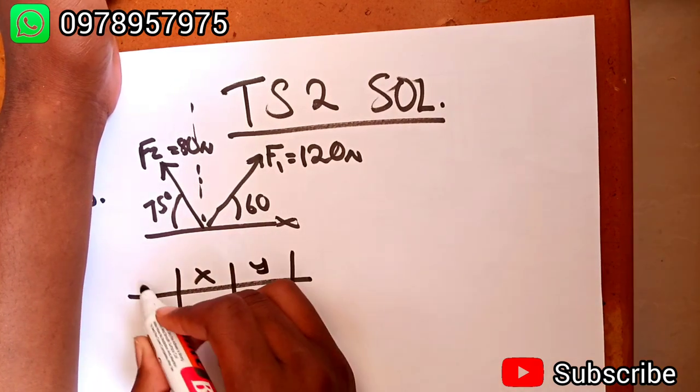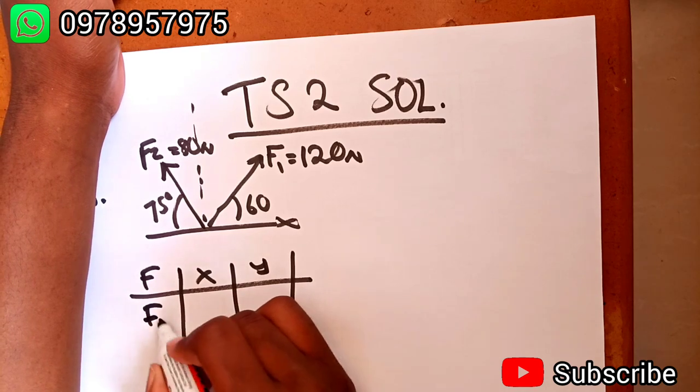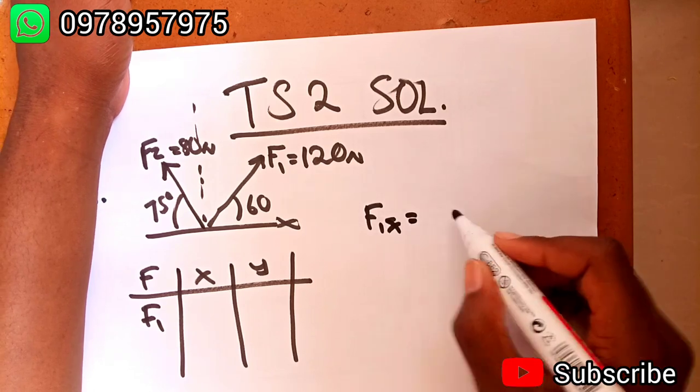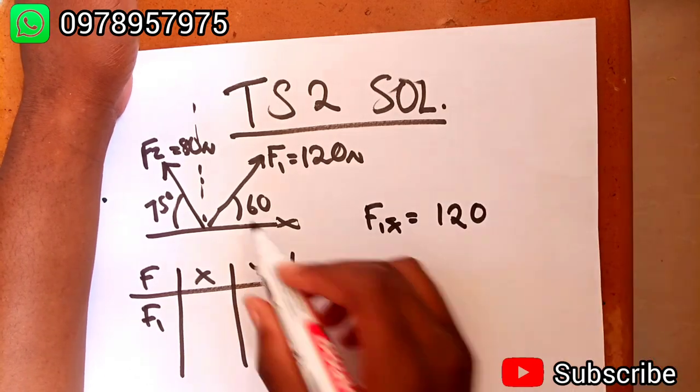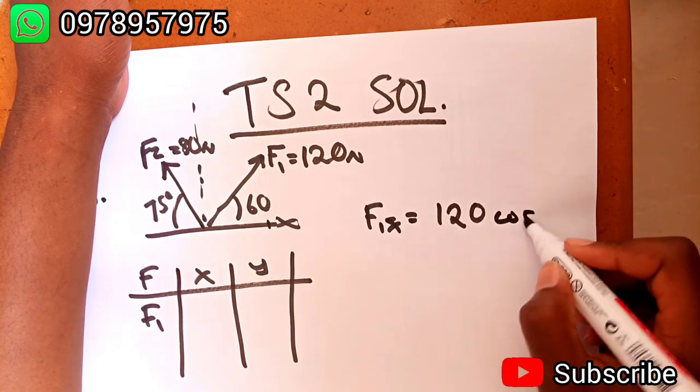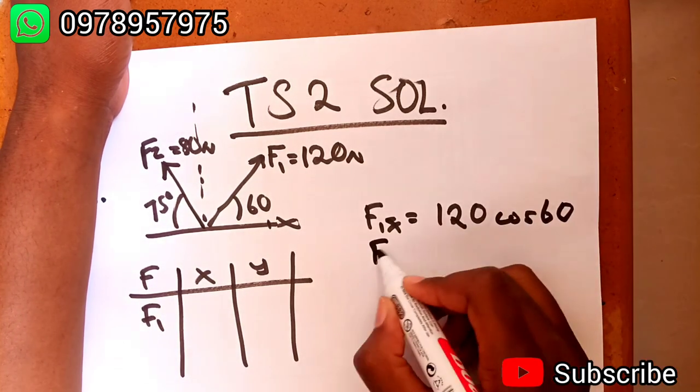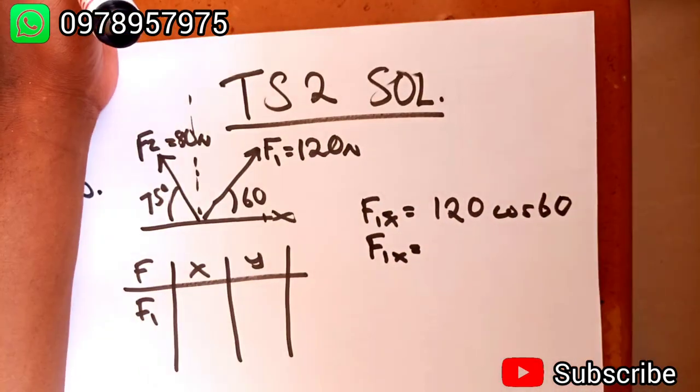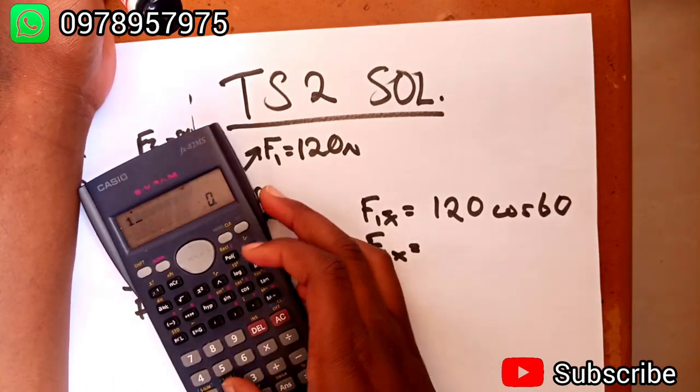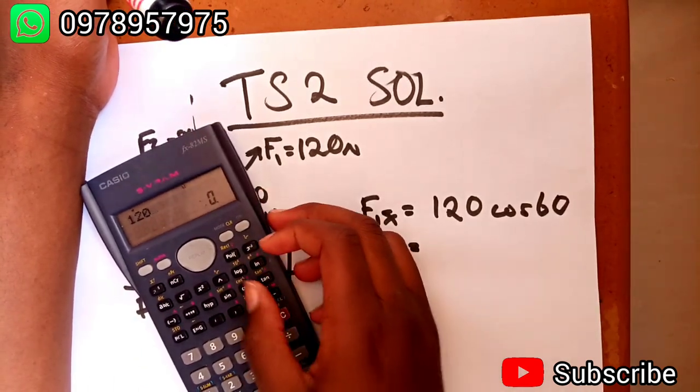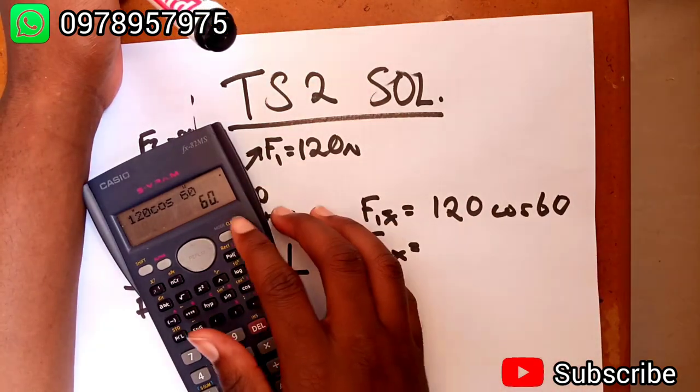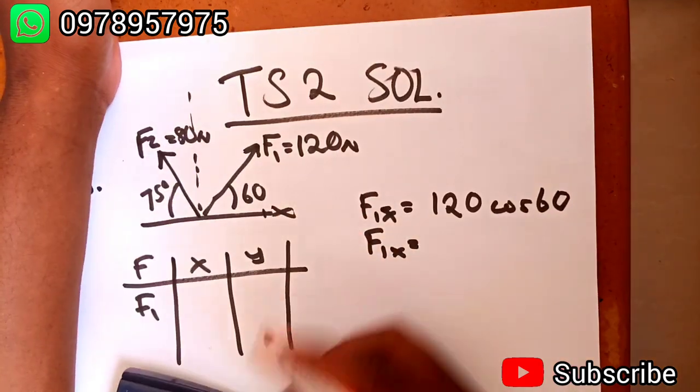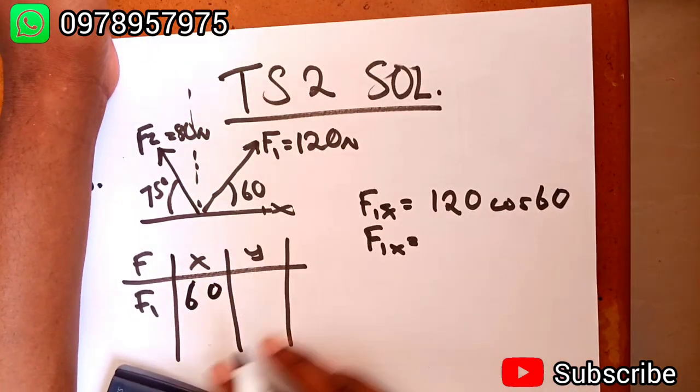We've got F1 in the x and y. F1 in the x is going to be given by 120 cosine 60, since the angle is there. Looking for the adjacent, that's 120 cosine 60, so that's 60.